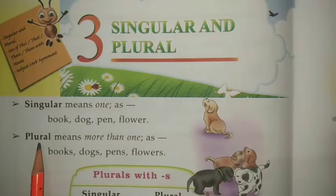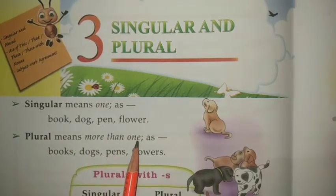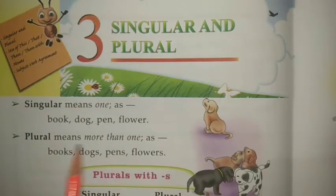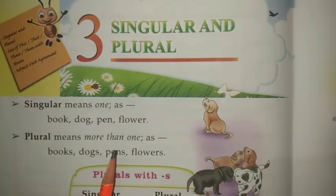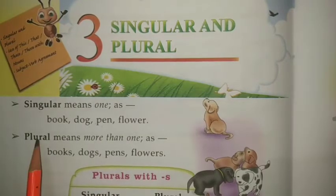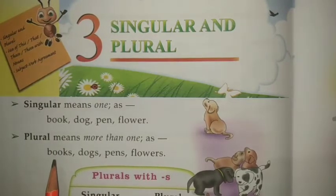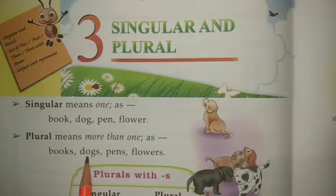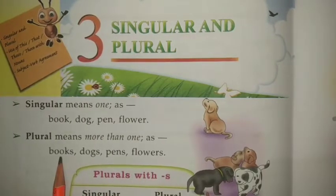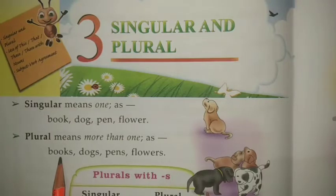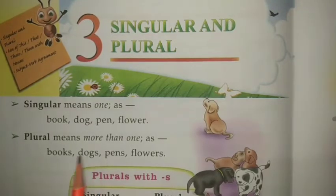Next is plural. Plural means more than one — यानि कि एक से ज्यादा जो भी चीज़ें हैं उसे कहते हैं plural. Examples: books, dogs, pens, and flowers — यहाँ एक से ज्यादा चीज़ें हैं.